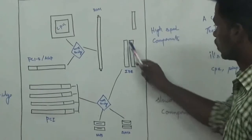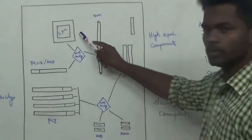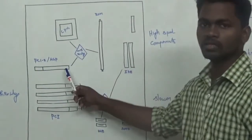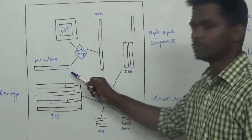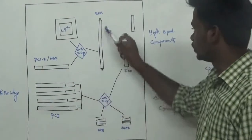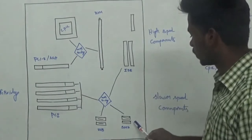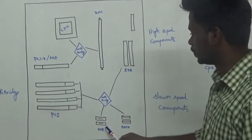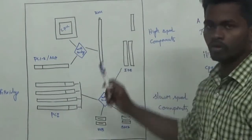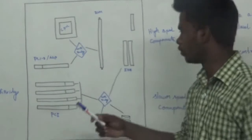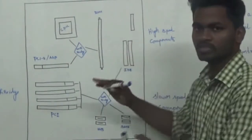This is the motherboard. This is the CPU. This is the AGP. This is the RAM. This is the IDE. This is the SATA cable. This is the USB and PCI. Now, first of all, North Bridge and South Bridge.